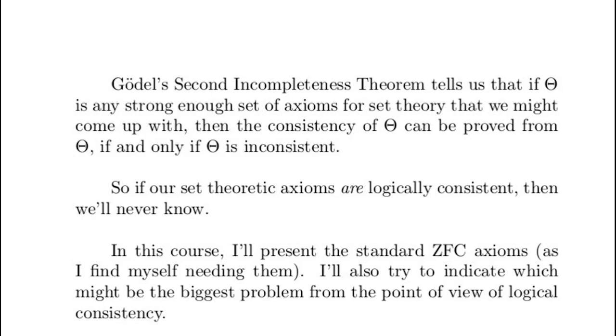But we can only prove it's consistent if it isn't. The point being, of course, that from an inconsistent set of axioms you can prove everything. So if theta is inconsistent, you can prove everything. You can prove in particular that theta is consistent. You can also prove that I am the Pope and the moon is made of green cheese and stuff like that. So if the set theoretic axioms are logically consistent, then we'll never be sure about it because Gödel's Second Incompleteness Theorem prevents us from knowing.